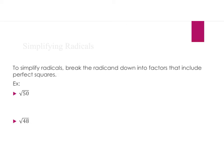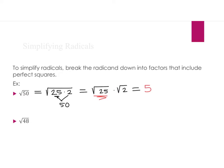For the first example, the square root of 50 — when I think about my perfect squares, I know that 50 is really 25 times 2, and 25 is a perfect square. So I can break the radical into the square root of 25 times the square root of 2. The square root of 25 is 5, and I can't simplify the square root of 2 anymore, so this becomes 5 square roots of 2, which is the simplified version of the square root of 50.